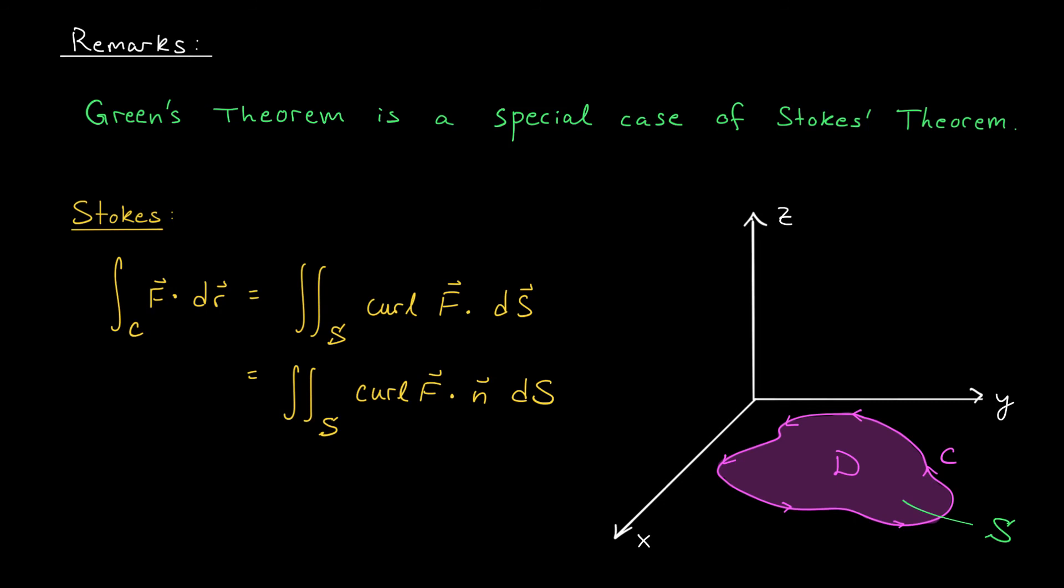But wait a second. If this surface is living in the xy plane, then it's perfectly flat. And therefore, a unit normal vector to our surface is this guy right here, k vector. Ah, so I could replace this n̂ with a k. And really, if I'm computing the surface integral over a flat surface, that's exactly the same as computing the double integral over that surface. We're doing the same process. I could write this whole thing as the double integral over D of curl of F · k dA.